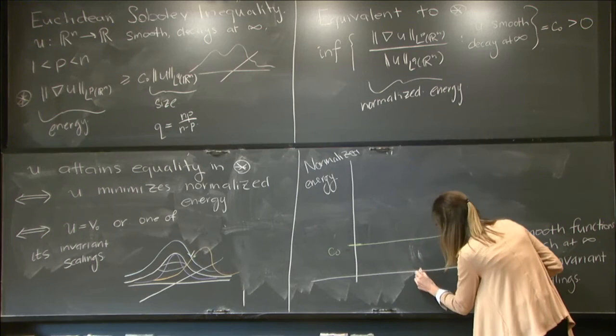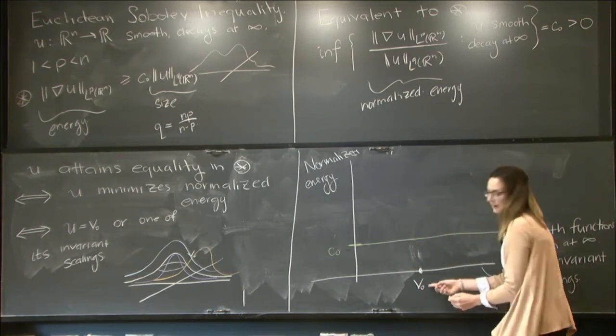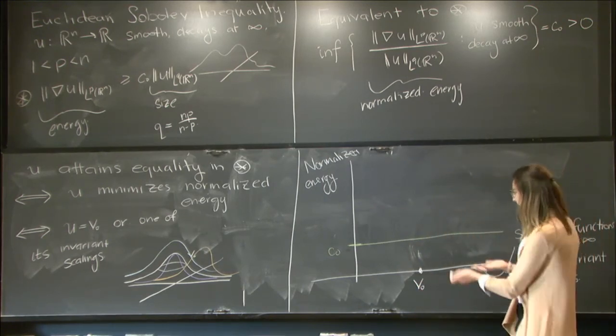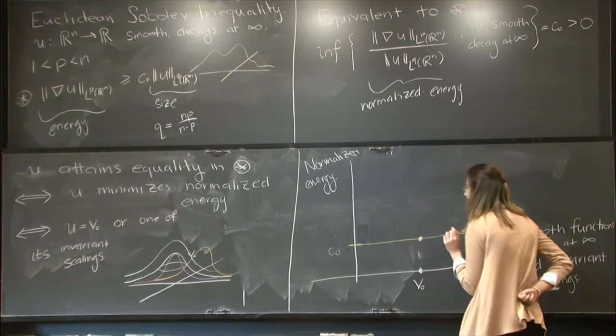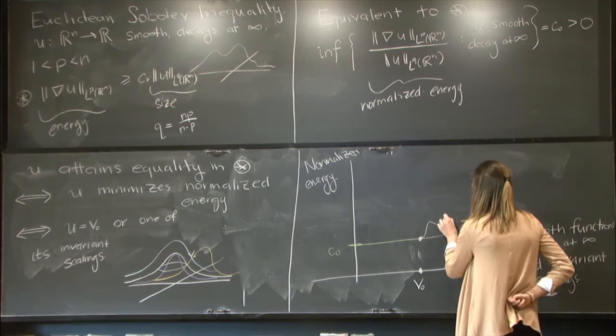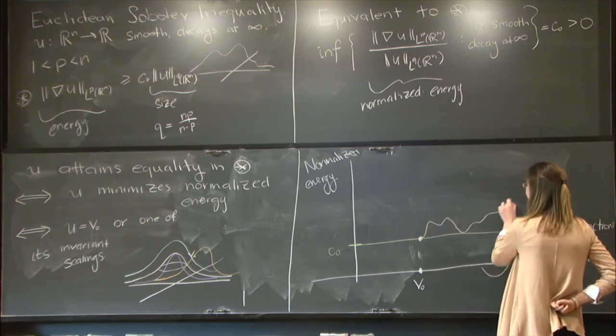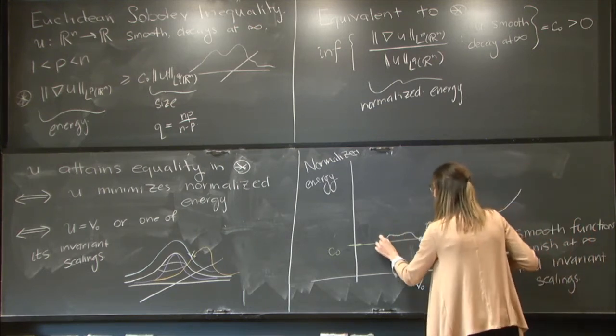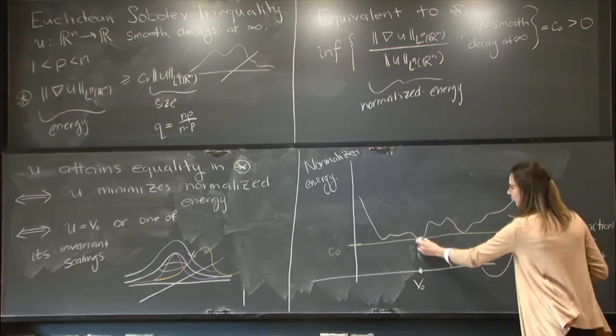what we've said with this result of Aubin-Talenti is that if I look at this profile v0, now it's an equivalence class, then this global minimum is achieved at v0 and nowhere else. So the rest of the energy profile, at the moment I don't know too much what it looks like, but I know even if it gets very close to the infimum elsewhere, it only achieves it here.